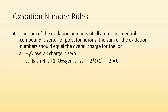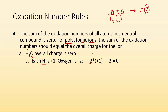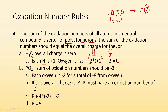Rule number four: the sum of the oxidation numbers of all the atoms in a neutral compound is zero. For example, in H₂O, if I take all the oxidation numbers and add them together, it has to equal zero because it's neutral. Hydrogen is plus one, there are two of them, so I get plus two from hydrogen. There's one oxygen with a minus two charge. Two plus negative two equals zero — perfect. For polyatomic ions, the sum of the oxidation numbers should equal the overall charge of the ion — like phosphate, where the sum must equal minus three.